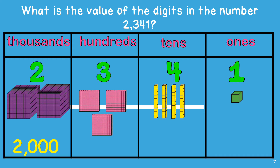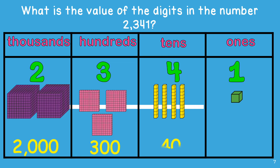Now we will count the hundreds blocks to determine the value of the 3 in the hundreds place: 100, 200, 300. The value of the 3 is 300. Next, we will count the ten-blocks to determine the value of the 4 in the tens place: 10, 20, 30, 40. The value of the 4 is 40. Finally, the value of the 1 is 1 because there is only one block there.